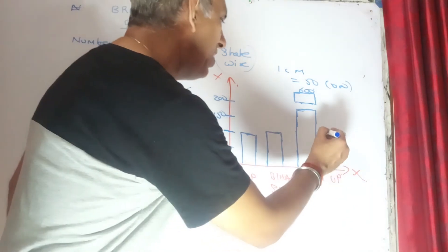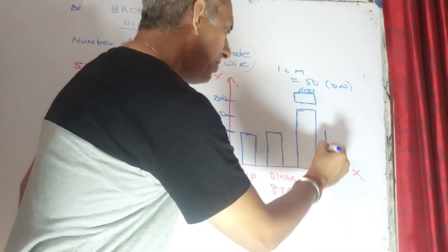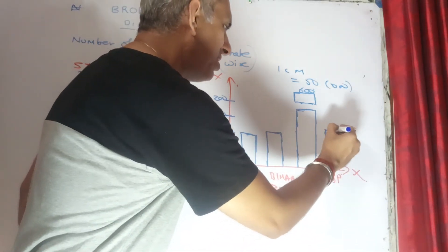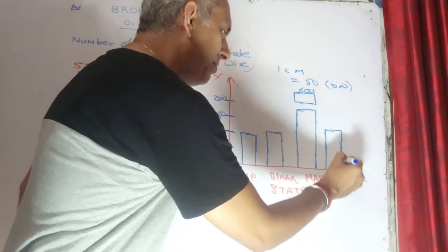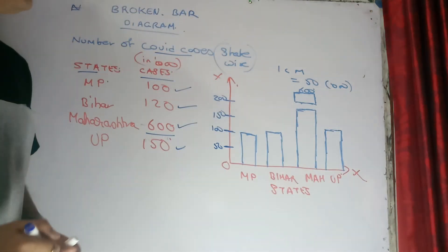Come to the last one. UP, 150. The last of the states. No need to break the bar because we have enough of the presentation scope.